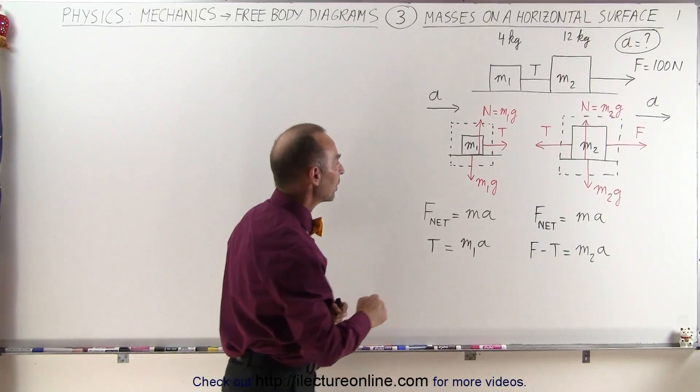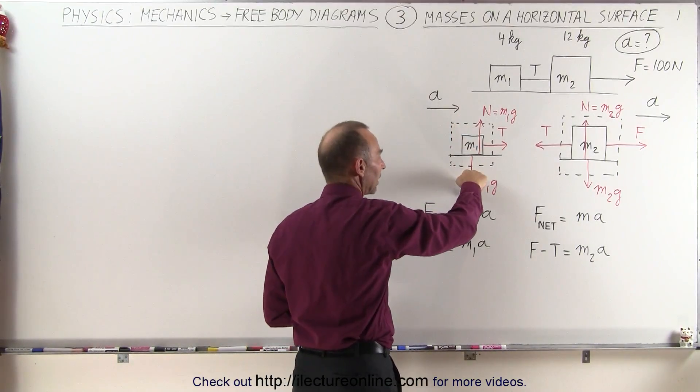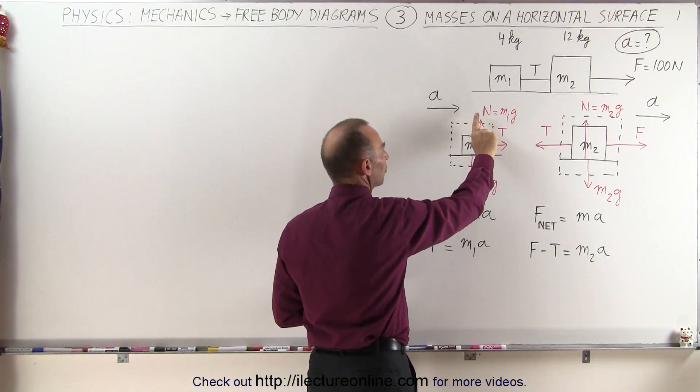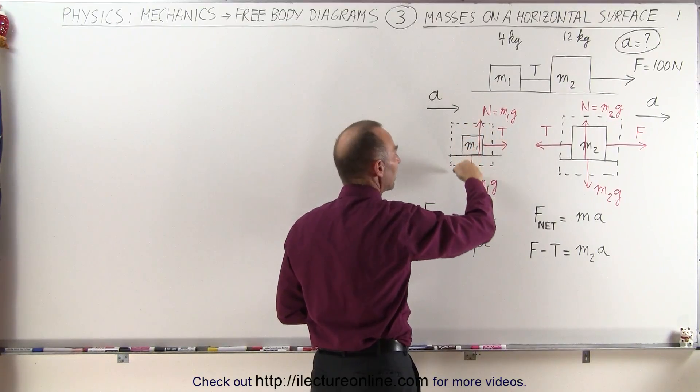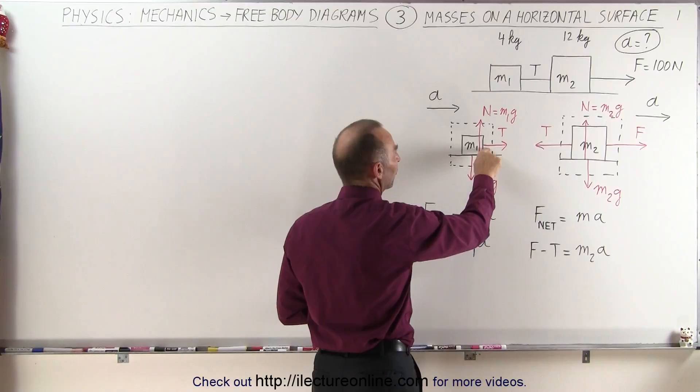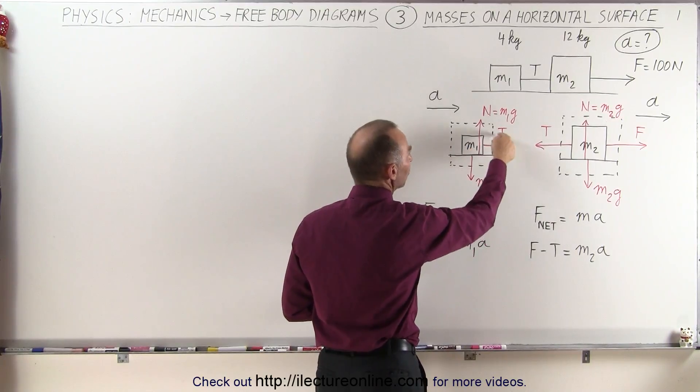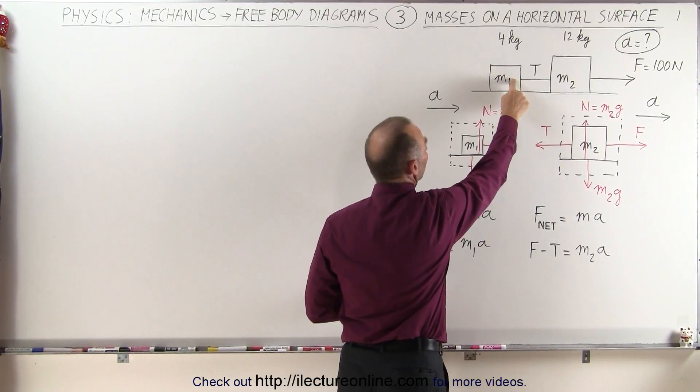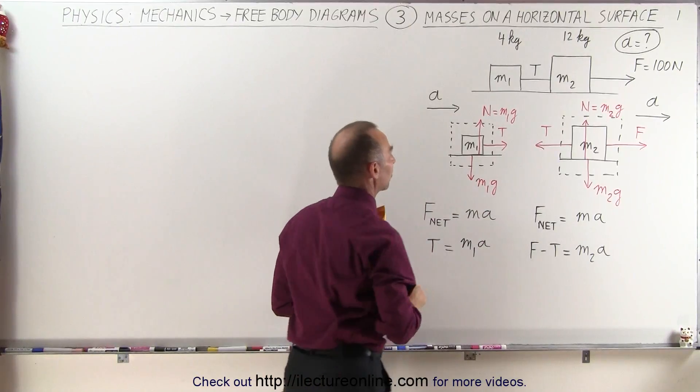And notice here that we have the weight pushing down, we have the normal force pushing back, these two forces are equal and opposite in direction so therefore they cancel each other out, and then we have a force pulling to the right which is the tension on the string pulling M1 in the same direction as acceleration.